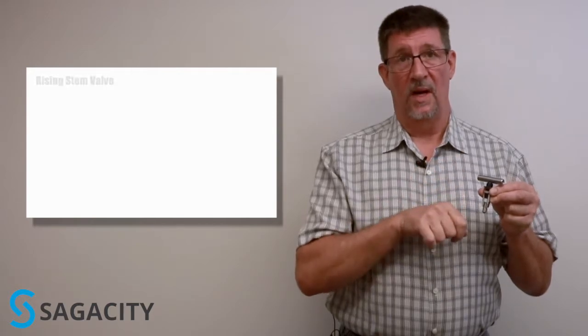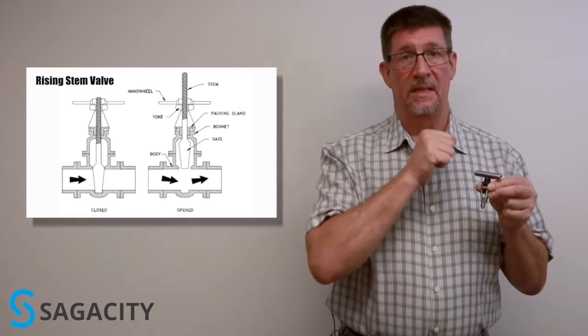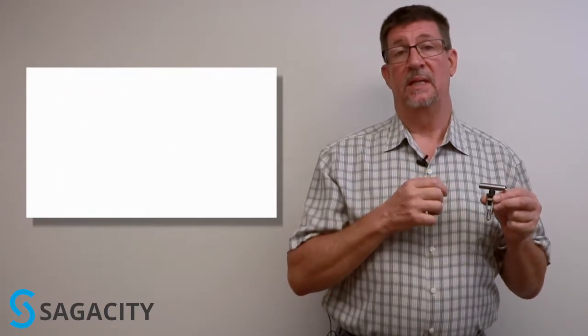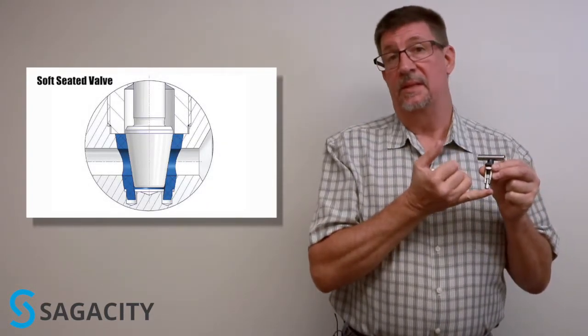They also have a rising stem valve in which the needle itself is actually a V-shape and sits in the seat of the valve. In gas applications, you'll use a soft-seated valve, and the seat material is in the base of the body, and that's where the needle sits.